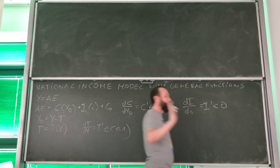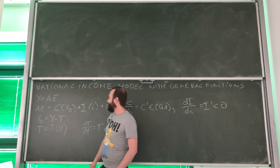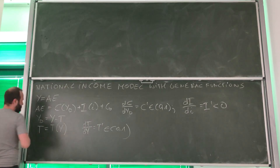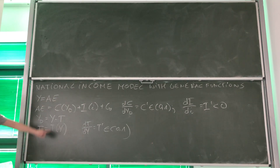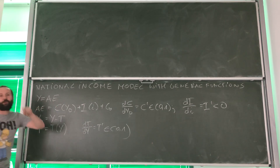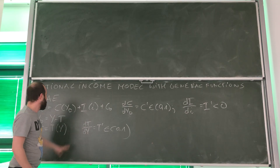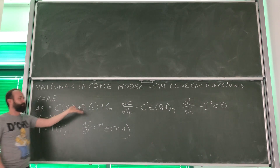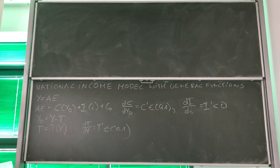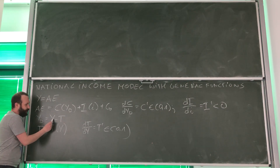Let's start by reviewing what is new to the model. We start with the equilibrium condition that we know. Aggregate expenditures are the sum of consumption, investment, and government spending.